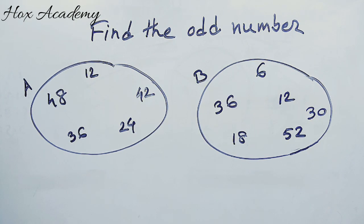We will call this find the odd number. The odd number is the number that doesn't fit the pattern with the other numbers. We will call this A and B.